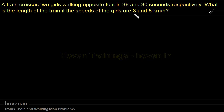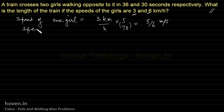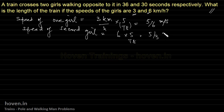We start by converting the speeds from kilometers per hour into meters per second, since the times are in seconds. Multiplying by 5/18: the speed of the first girl is 3 × 5/18 = 5/6 meters per second. The speed of the second girl is 6 × 5/18 = 5/3 meters per second. These are the two girls' speeds that we will use.